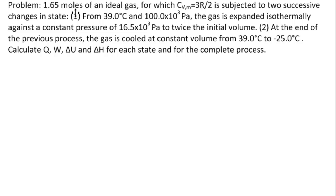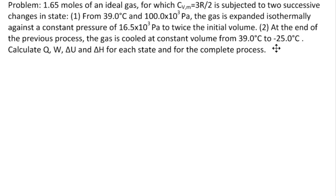The problem reads: 1.65 moles of an ideal gas for which CVM is 3R/2 is subjected to two successive changes in state. Process 1: from 39°C and 100×10³ pascals, the gas is expanded isothermally against a constant pressure of 16.5×10³ pascals to twice its initial volume. Process 2: at the end of the previous process, the gas is cooled at constant volume from 39°C to −25°C. Calculate Q, W, ΔU, and ΔH for each state and for the complete process.